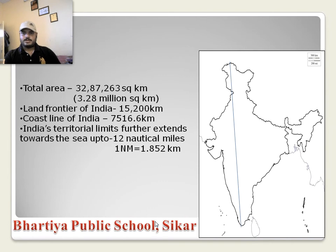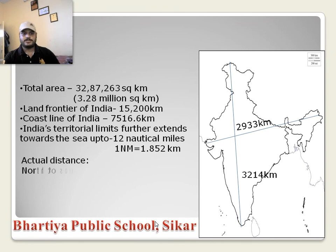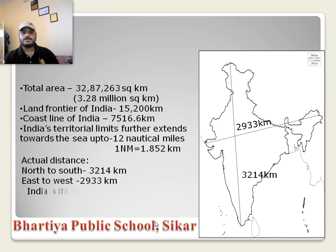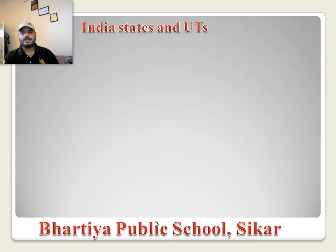The actual distance from north to south, from Kashmir to Kanyakumari, is 3,214 kilometers, and from east to west, from Gujarat to Arunachal Pradesh, is 2,933 kilometers. So the actual distance from north to south is 3,214 kilometers and east to west is 2,933 kilometers. The total area of India is 3.28 million square kilometers, which accounts for 2.4 percent of the total area of the world.